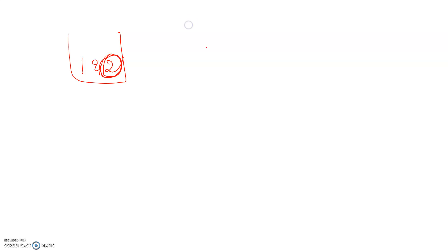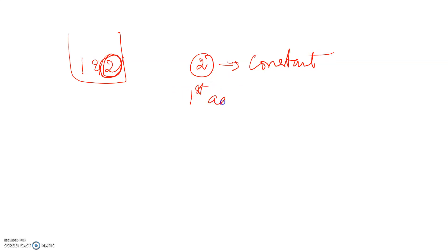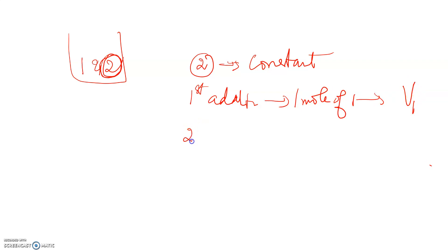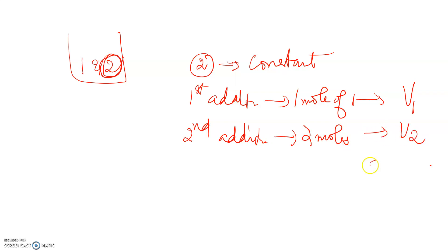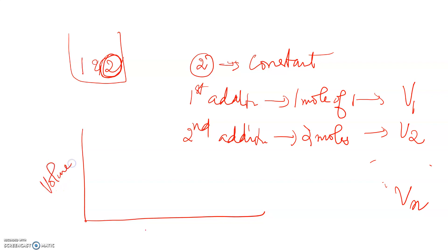We are keeping component two constant and adding more of component one so we can measure the change in volume. On first addition, we add one mole of component one and measure the volume as V1. On second addition, we add one more mole of component one and let the volume be V2, and so on up to Vn. We then plot a graph of the volume of the solution versus various amounts of component one added.